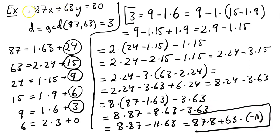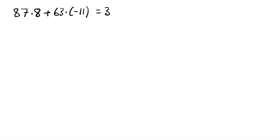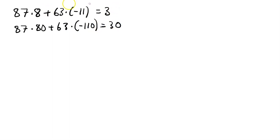We can write: 87 × 8 + 63 × (−11) = 3. This is similar to the left-hand side of our equation. To get from 3 to 30, we multiply both sides by 10, giving 87 × 80 + 63 × (−110) = 30. If we couldn't reach the right-hand side by multiplying, that would mean the equation has no solutions — that's the case when the GCD doesn't divide c.